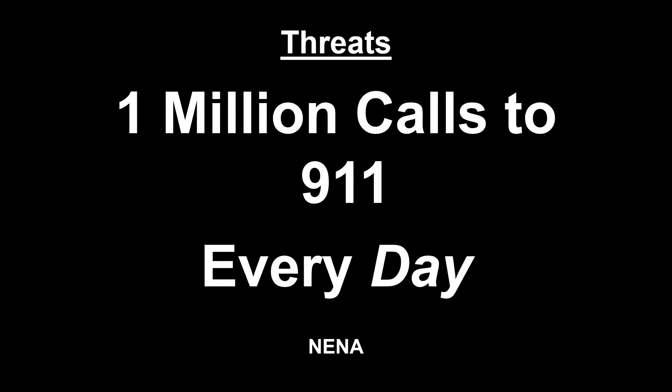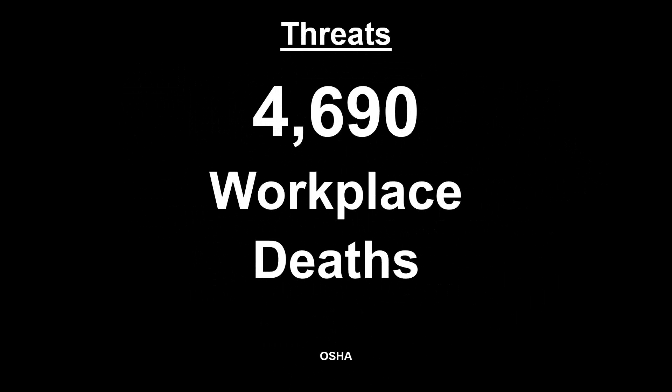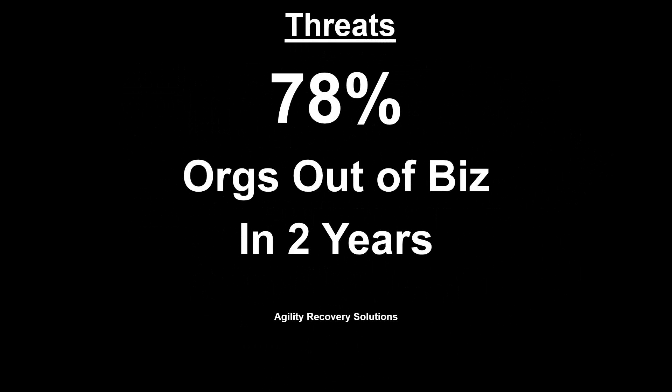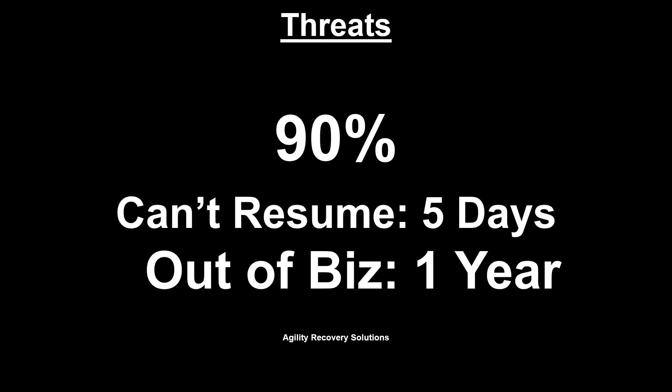4,700 people are killed in the American workplace every year per OSHA. 112,000 structural fires occur at work — not residential, at work — per the NFPA annually. Research shows 4 out of 5 organizations go out of business within two years after a major emergency if they haven't planned or trained. Nine out of ten go out of business within one year if they can't resume offering their product or service within five days. Both statistics are being borne out almost to the percentage point by Hurricane Sandy.